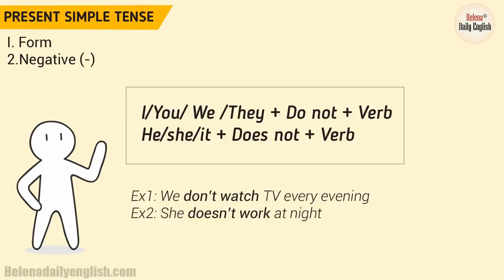2. Negative. I, you, we, they plus do not plus verb. He, she, it plus does not plus verb. Example 1: We don't watch TV every evening. Example 2: She doesn't work at night.